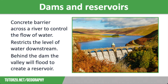But dams are controversial and there are many disadvantages to them. They are the most expensive type of hard engineering and have a large impact on the river valley. Flooding behind the dam causes displacement and loss of farmland. Less water downstream can also affect farming — for example, less alluvium being deposited decreases soil fertility.